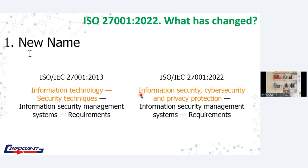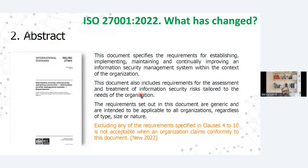The next change is the abstract from the document itself. The abstract has been changed a little bit. The orange change reflects that the requirements specified in clause 4 to 10 are not excludable when an organization claims conformity. It means that in order to conform to this standard you have to fulfill the requirements right from clause 4 to 10.